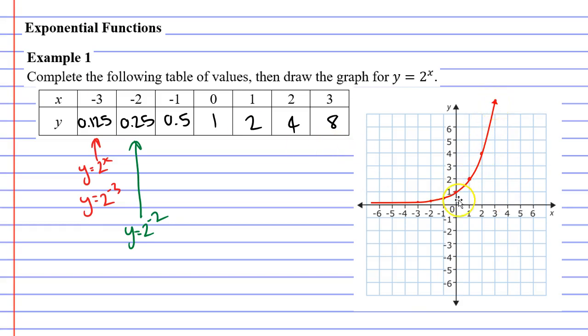You might also notice when looking at this graph that it passes through the point 0, 1 down here. And for many basic exponential functions, it will pass through this point just about every time.